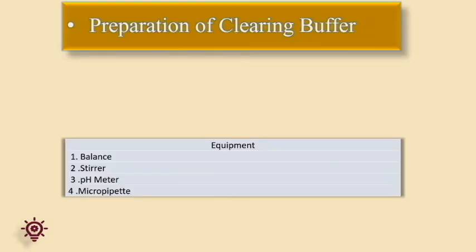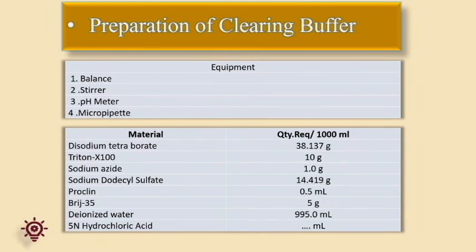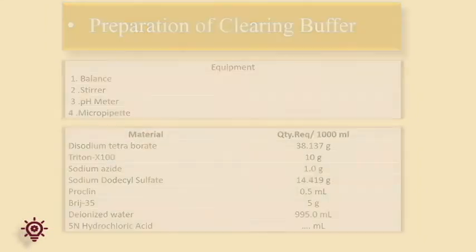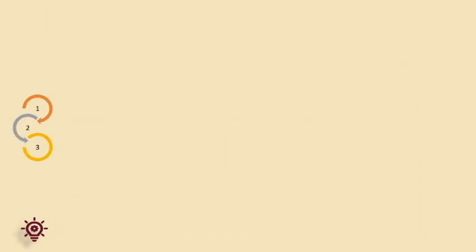Preparation of clearing buffer: weigh and dissolve calculated quantities of disodium tetraborate, Triton X-100, sodium dodecyl sulfate, proclin, Brij 35, and sodium azide in 80% of deionized water. Adjust the pH to 8.5 plus or minus 0.1 with 1 normal HCl. Make up the final volume to 100% with deionized water. Send a QC sample for testing. Store in a clean polycarbonate bottle with appropriate labeling.